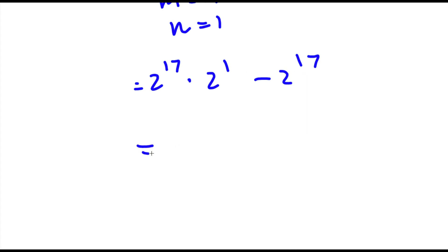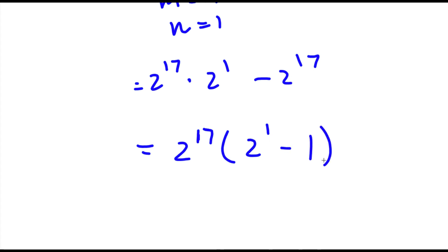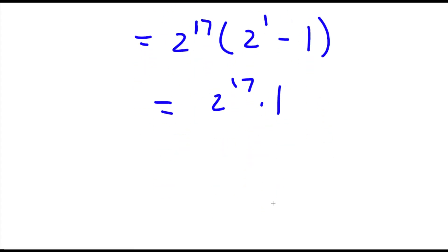From here I can factor out 2 to the power of 17. So I have 2 to the power of 17 times the quantity 2 to the power of 1 minus 1. Now 2 minus 1 is 1, so I have 2 to the power of 17 times 1, which is equal to 2 to the power of 17.